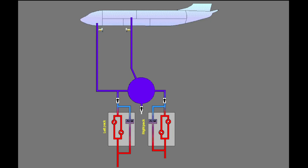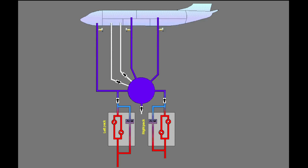From the mix manifold, the air goes to the forward passenger cabin and the aft passenger cabin. Recirculation fans collect air from the forward cargo bay and send it to the mix manifold. The recirculation fans decrease the bleed load on the engines and save fuel.